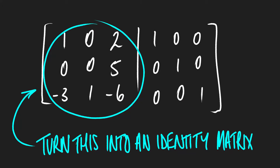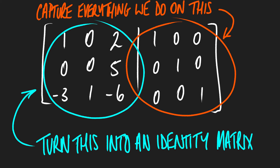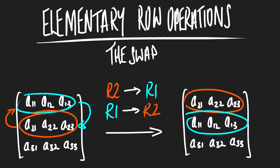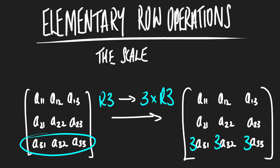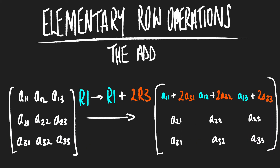Our target is to get our original matrix — the one on the left — into identity matrix form using elementary row operations. Elementary row operations allow us to: swap a row, scale a row by some number, add a row to another, or add a scaled version of a row to another. Using just that, we try to get the matrix into identity matrix form.